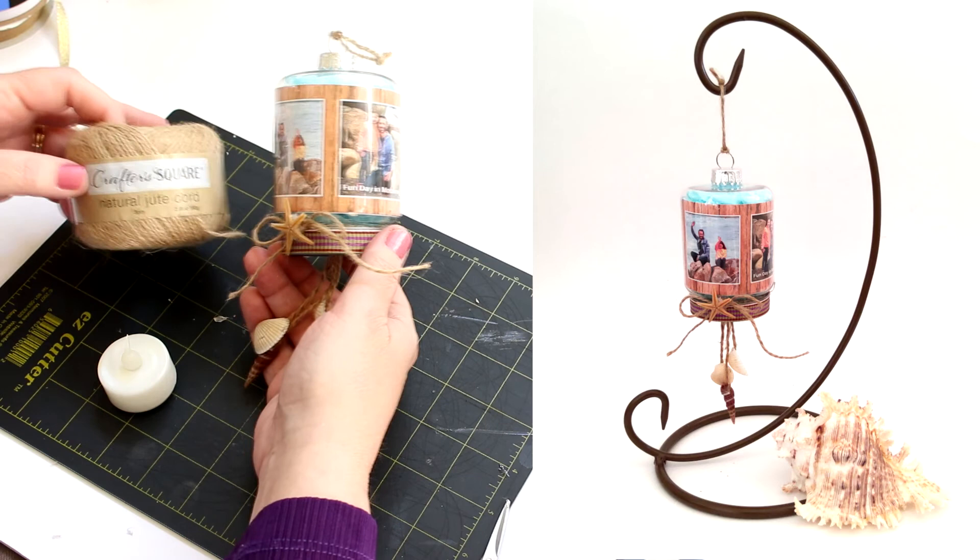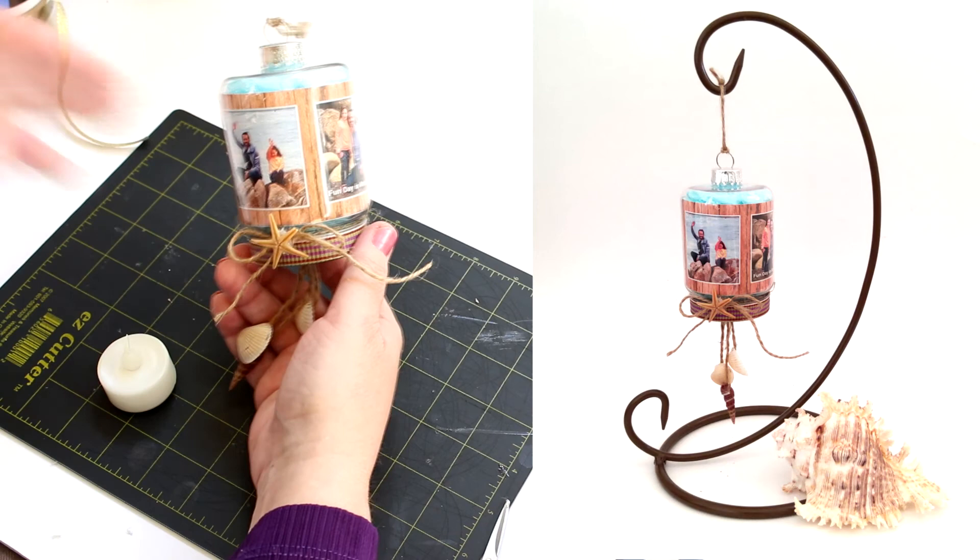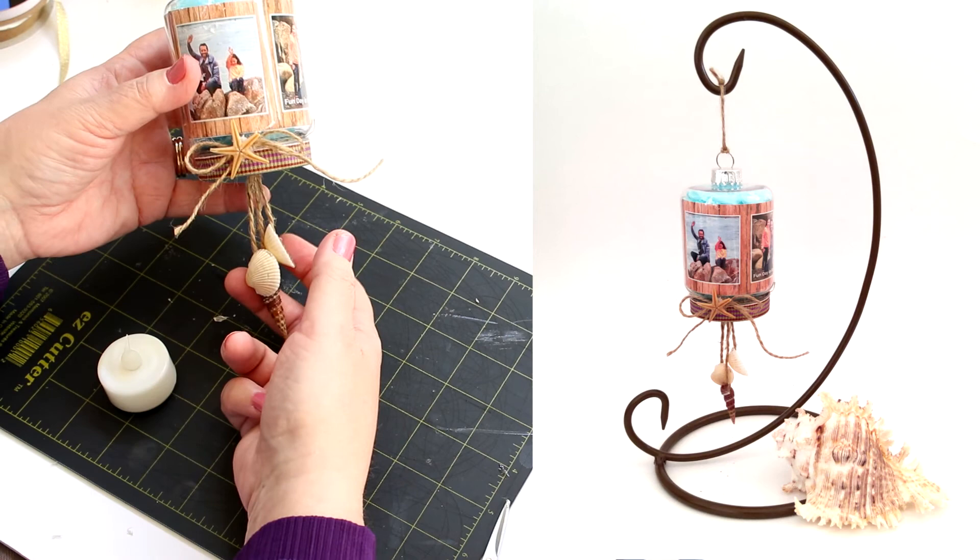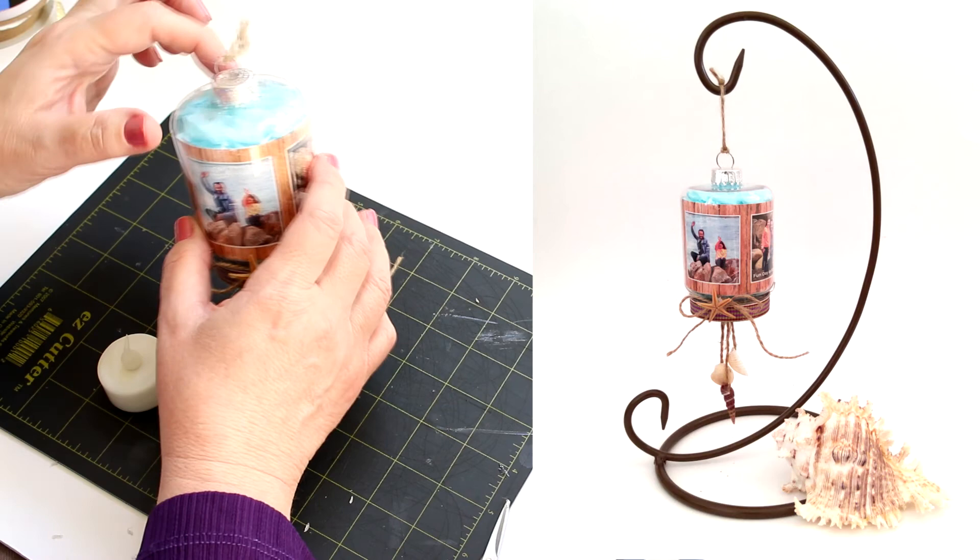And then I'd also purchased from the Dollar Tree this crafter square natural jute cord. So I've just gone ahead and wrapped that around tied a bow and then glued on some of the shells for extra decoration. And I think what I'll do is also take that jute and just go around the top of this ornament and finish that off.